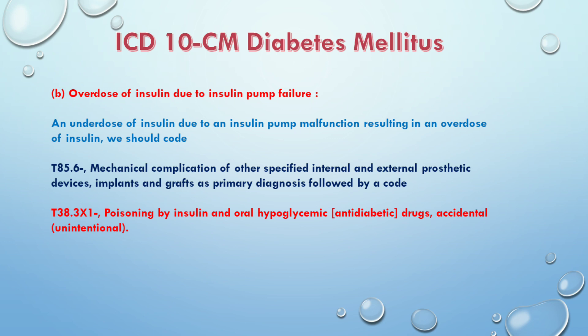There is a code for poisoning of insulin. We code for poisoning depending on intent: if it is accidental, self-harm, assault, or undetermined, we code accordingly. In this case, since the pump malfunction is unintentional, there is a code for accidental or unintentional. If it is due to overdose, that code is used. There is then a code for secondary diagnosis, and after that, a code for diabetes.